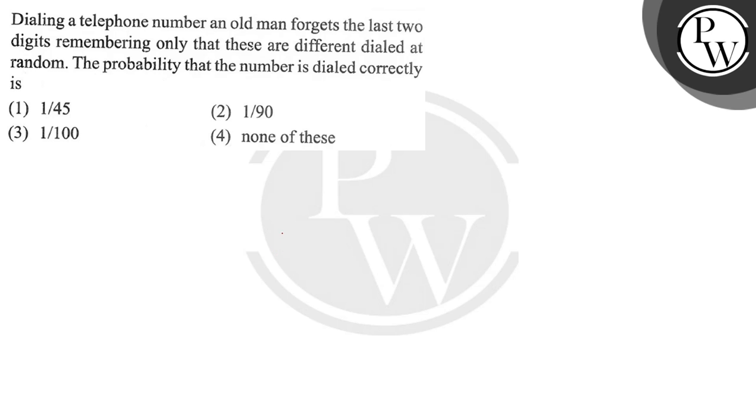Hello, let's see the question. The question says that dialing a telephone number, an old man forgets the last two digits, remembering only that these are different, dialed at random. Find the probability that the number is dialed correctly.